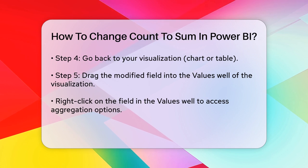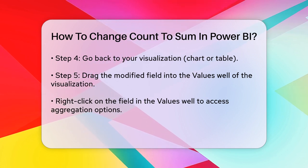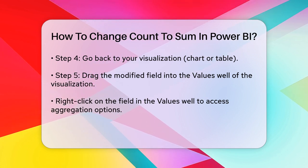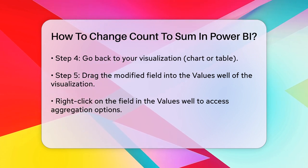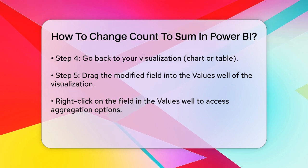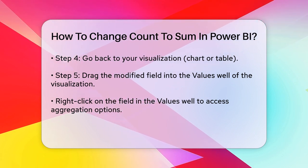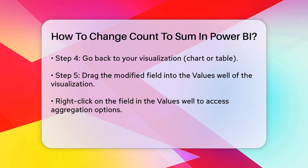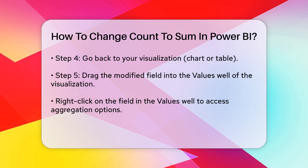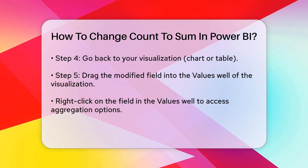If the field is already in your visualization but is set to Count, you can change the aggregation directly. Right-click on the field in the visualization, select the drop-down arrow, and choose the desired aggregation type, such as Sum or Average.